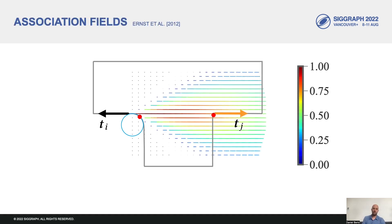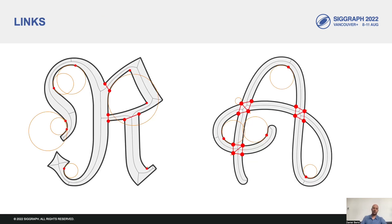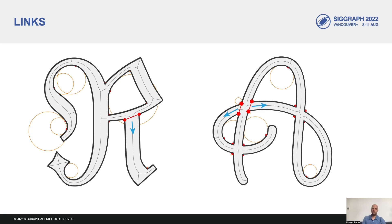For this task, we use a perceptually inspired method by Ernst et al., which gives us an association field between two tangents. The field decays with distance between the tangents and deviations from co-circularity of one tangent with the next. Similarly to many part decomposition methods, we formulate segmentation hypotheses by joining pairs of concavities with line segments — here we call these links. One single link defines a potential incidence relation between one stroke and another. Pairs of links with good continuation along the outline define regions where one stroke potentially crosses another.